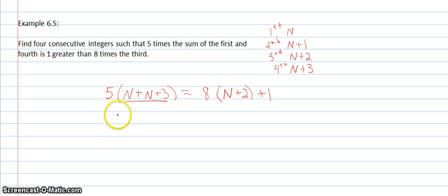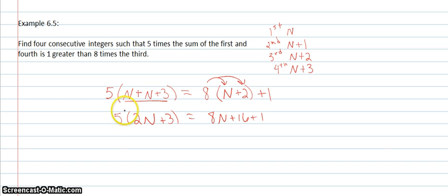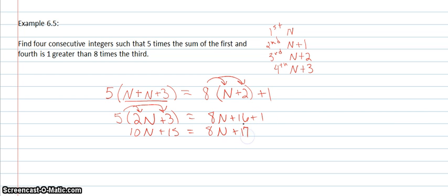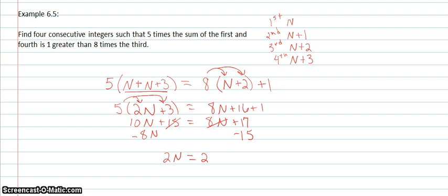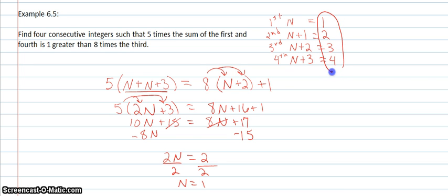Then we'll simplify inside the parentheses: five times 2n plus 3. We'll distribute the eight, then distribute the five. I'll combine the 16 and 1 together because they're like terms. Now I'll get my n's on one side and my constants on the other — subtract 8n on the left and subtract 15 on the right. So 2n equals 2. Dividing both sides by 2, n equals 1. So my first number is 1, second is 2, third is 3, and fourth is 4. And we found our four consecutive integers.